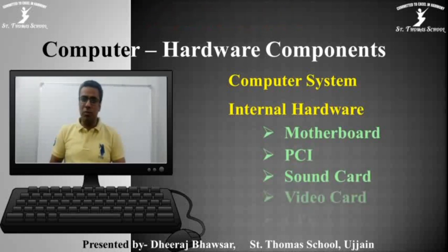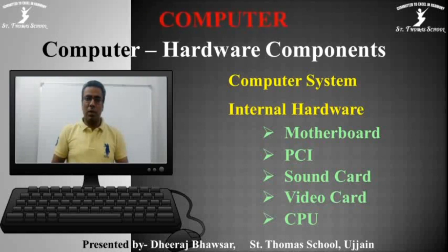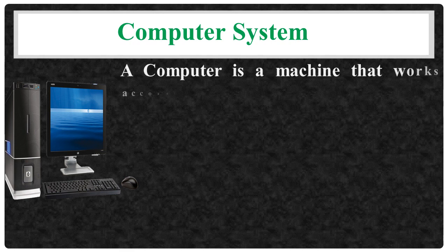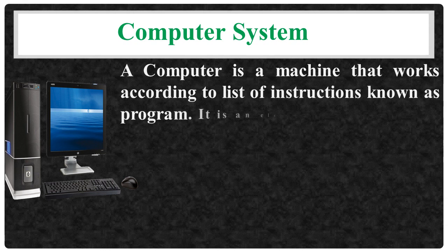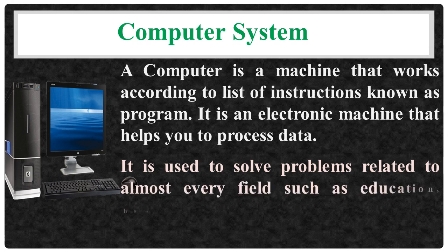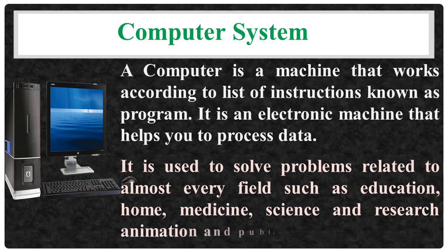Let's start today's first topic: computer system. A computer is a programmable electronic device that accepts raw data as input and processes it with a set of instructions to produce the result as output. In other words, a computer is a machine that works according to a list of instructions known as a program. It is an electronic machine that helps you to process your data and is used to solve problems related to almost every field such as education, home, medicine, science and research, animation and publishing, and so on.